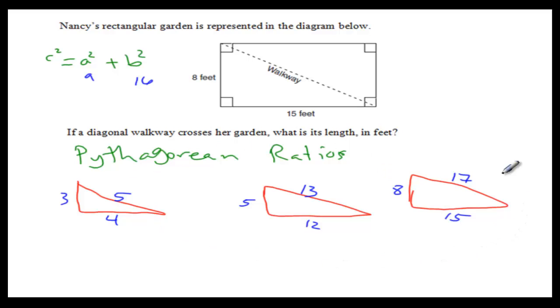For any Pythagorean, for any right triangle, if you have one leg 8, the other leg 15, therefore the hypotenuse is 17. And that's it. So the walkway is 17 feet. That's your final answer.